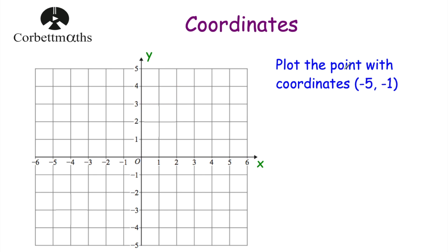Next, we've been asked to plot the point with coordinates (-5, -1). We go to the origin and then go to negative 5 along the x-axis. The y-coordinate is negative 1, so we go down 1. That point is (-5, -1), and we label it negative 5, negative 1.